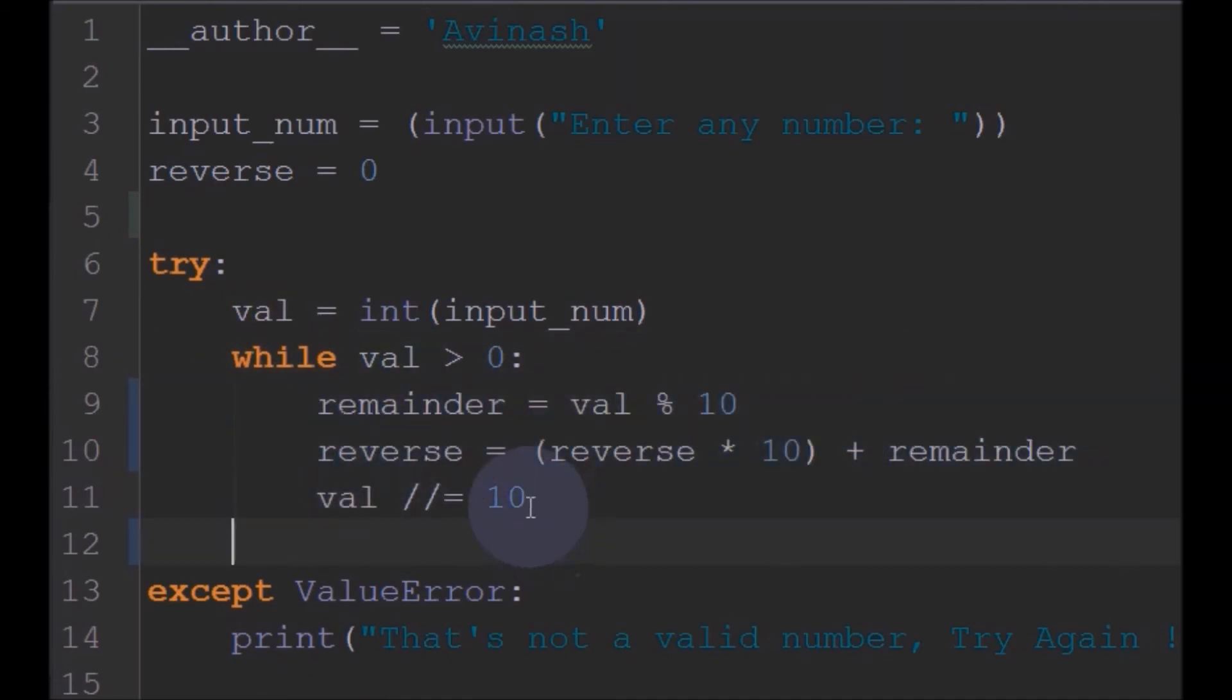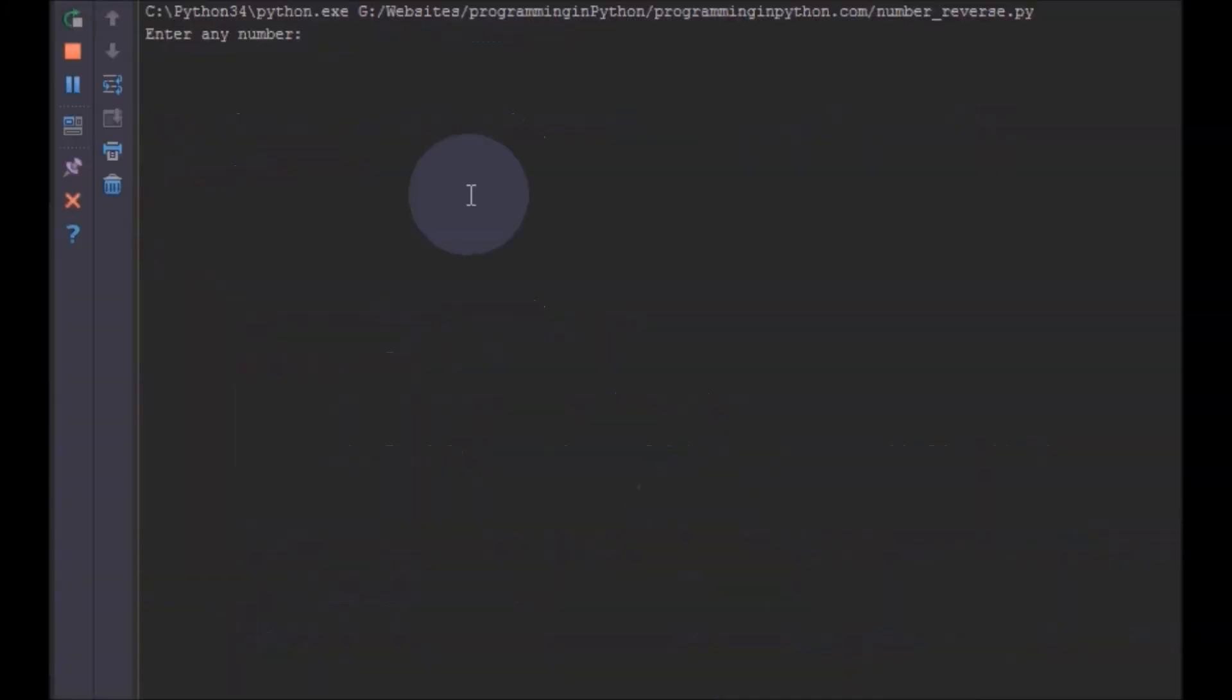So, that's all. Now we will just print the reverse variable here. This will contain the reverse of a given number. So, now if we save this and run, I will enter some number like 147. It shows the reverse of a given number is 741.